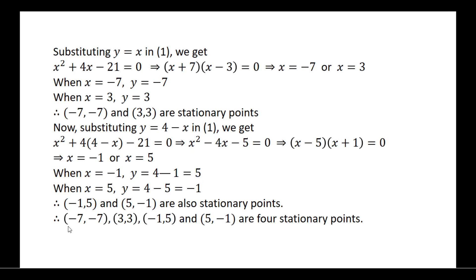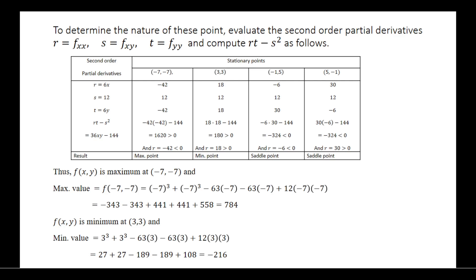So in total we got stationary points: (−7, −7), (3, 3), (−1, 5), and (5, −1). Now we will find out the second order partial derivatives and their corresponding values at the stationary points — go through the table. For the stationary point (−7, −7), you get rt minus s squared greater than 0 and r less than 0.